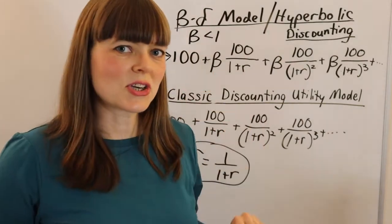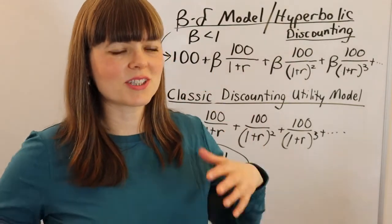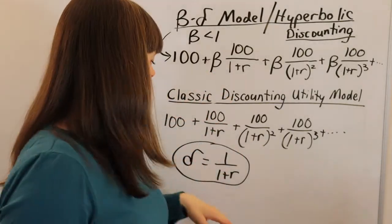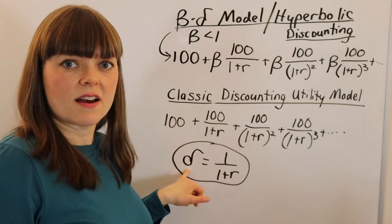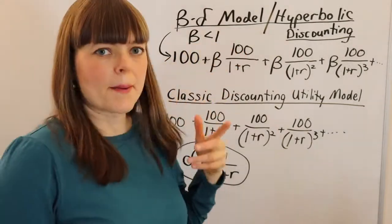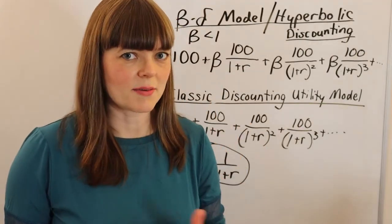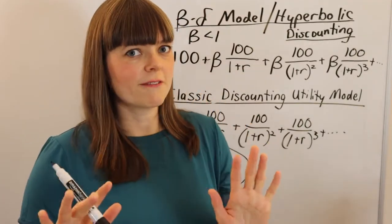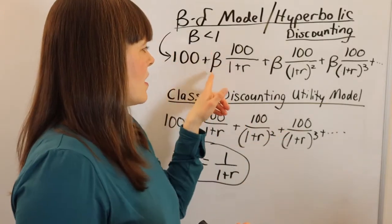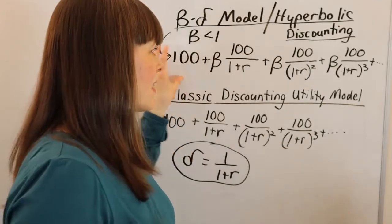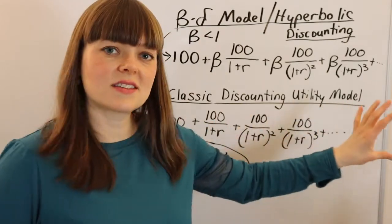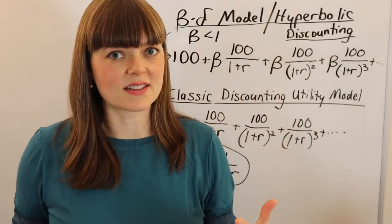These two models look pretty similar, so the question is: why do we even need this beta? Can't we just capture whatever we need by having a lower delta instead of having beta less than one? The thing that you can get with beta-delta discounting that you cannot get through classic discounting is time inconsistency. You'll have to believe me first, and then when you walk through a few examples, you'll see how it works.